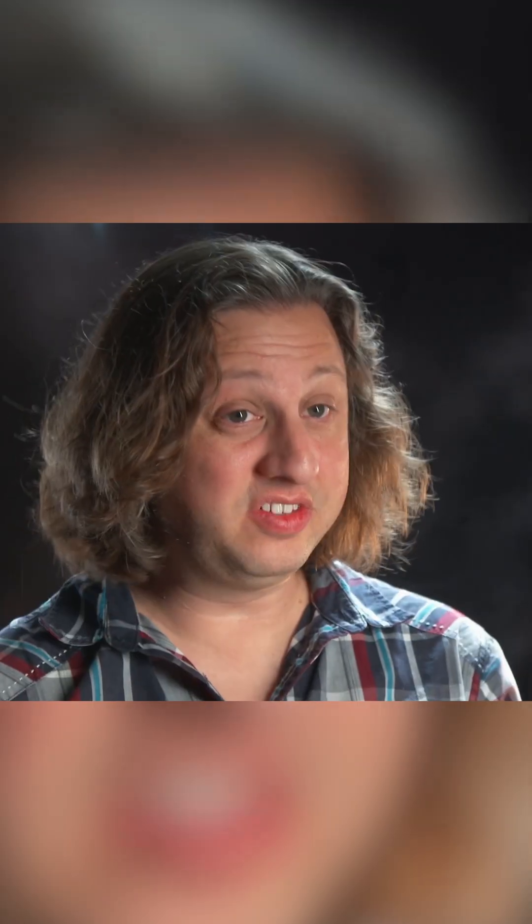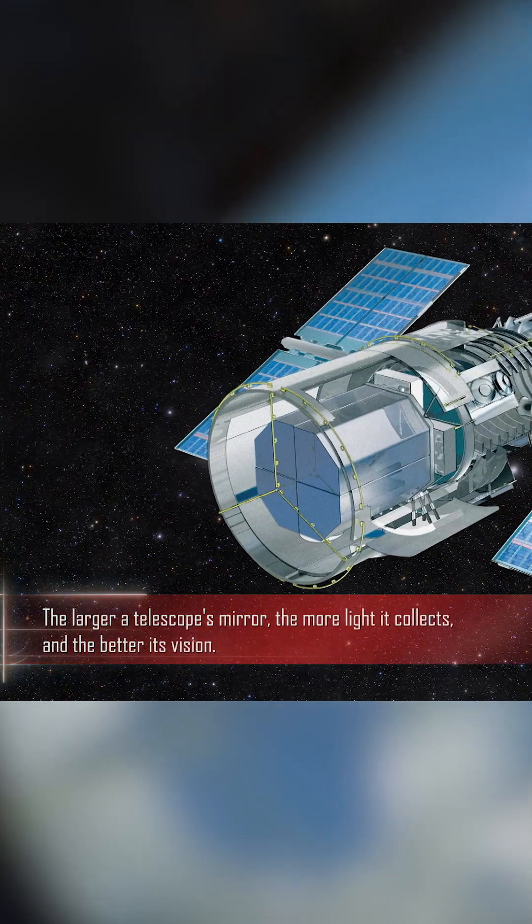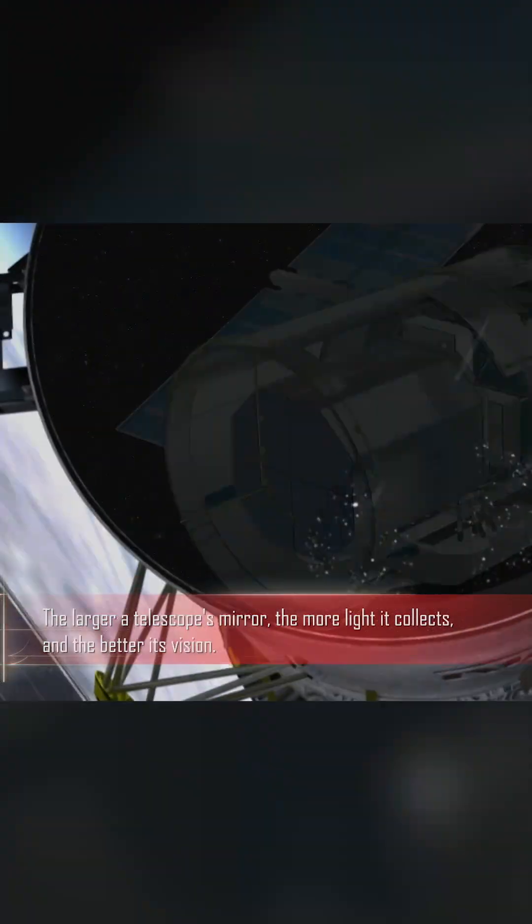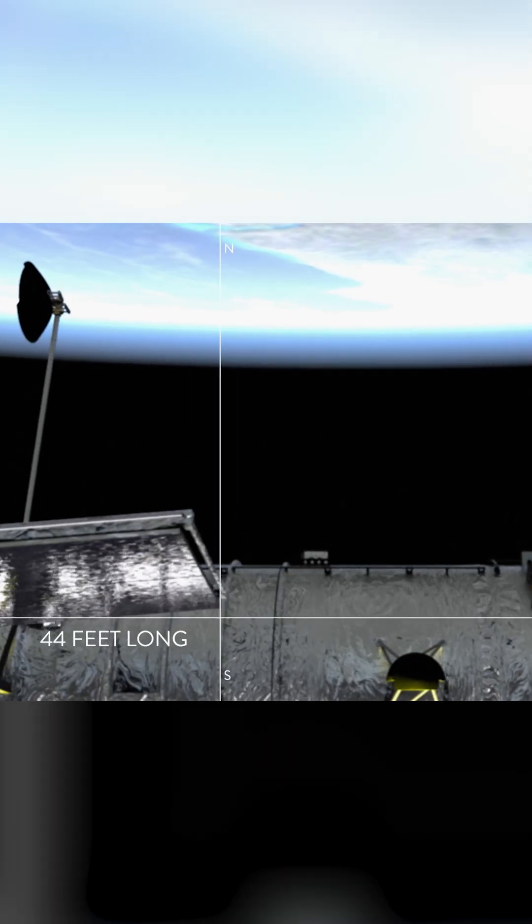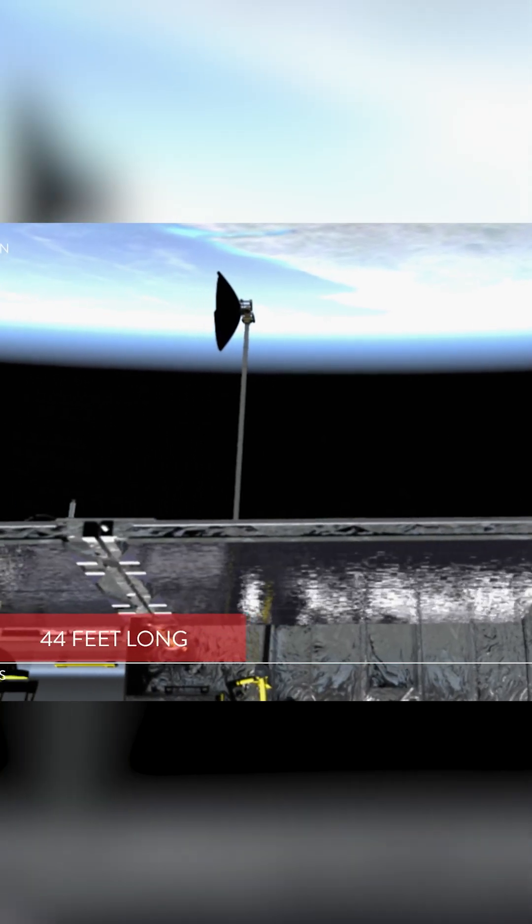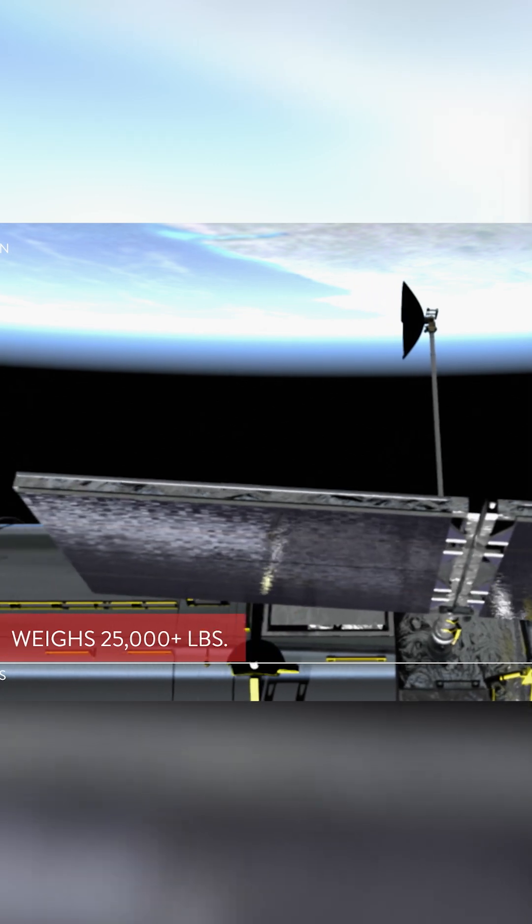The Hubble Space Telescope has a mirror that's eight feet across. This is much bigger than any telescope that you've ever used in your backyard. Hubble is about 44 feet long and weighs more than 25,000 pounds.